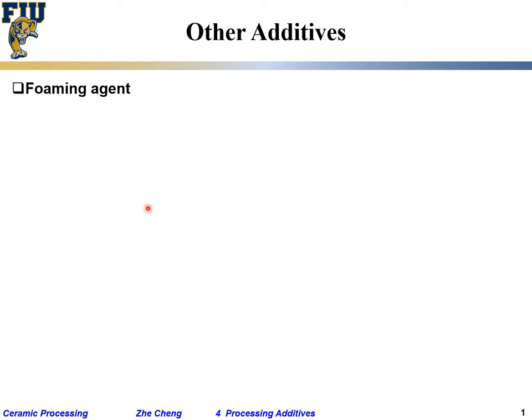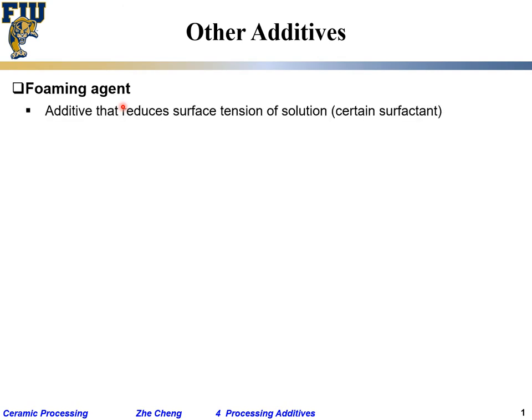Let's quickly talk about some other additives. Foaming agent — simply to make foams. If you want highly porous material, you create large pores by adding a foaming agent, typically a surfactant.